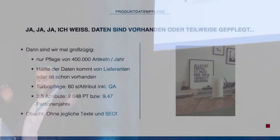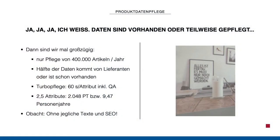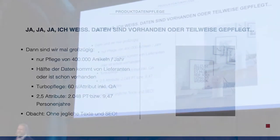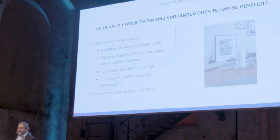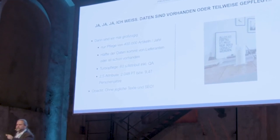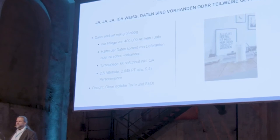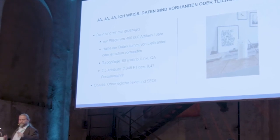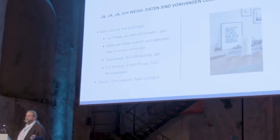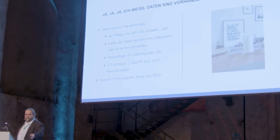Usually at this point somebody protests, but nobody does — you're nice. 'We have data, it's not so much work, it won't take that long.' We say okay, say 400,000 articles and half the data is available in the quality I need. At only 60 seconds per attribute, this is still nine and a half years. I can manage this because I have a team, and if I assign it to various people, we can do it in three quarters of a year — maybe half a year if we bring more people on board. But we're only talking about product attributes.